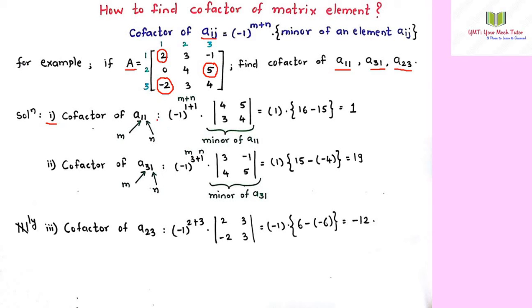Let us find the cofactor of a11. By definition, cofactor equals minus 1 to the power m plus n. Here m is the row number and n is the column number, so m equals 1 and n equals 1. That gives us minus 1 to the power 1 plus 1, multiplied by the minor of a11.